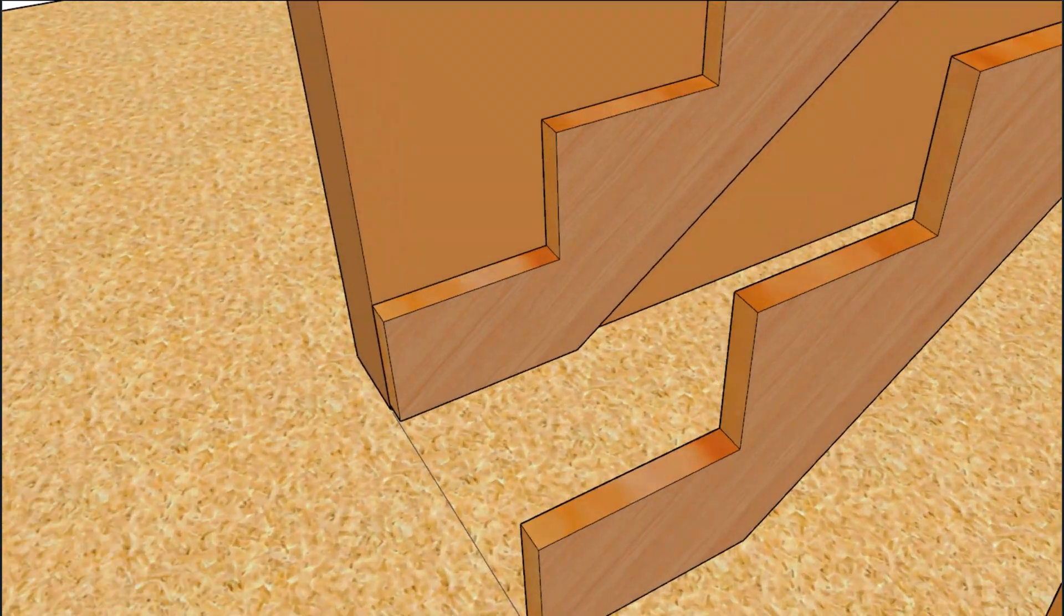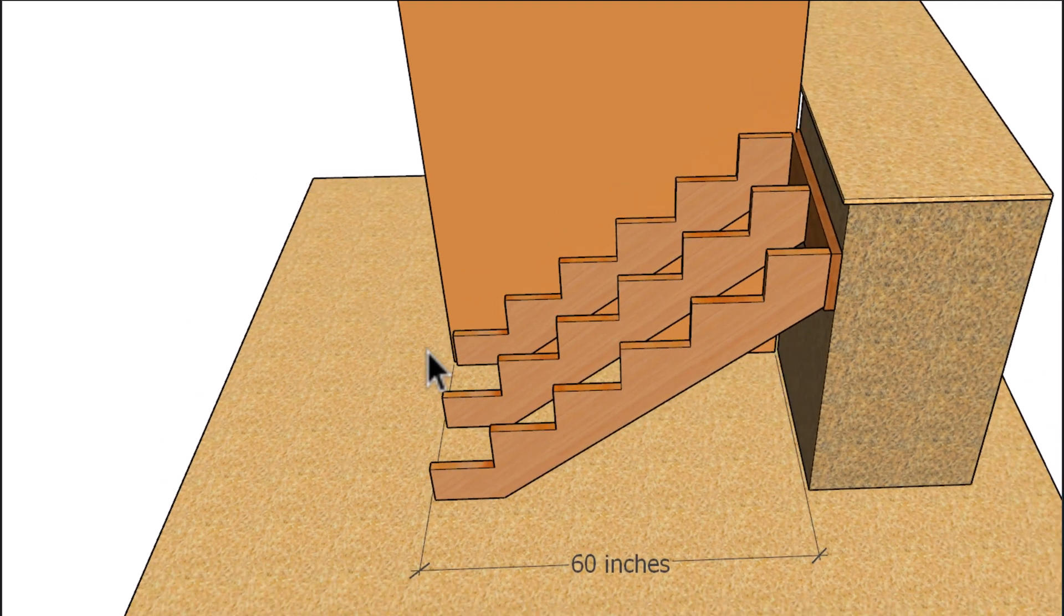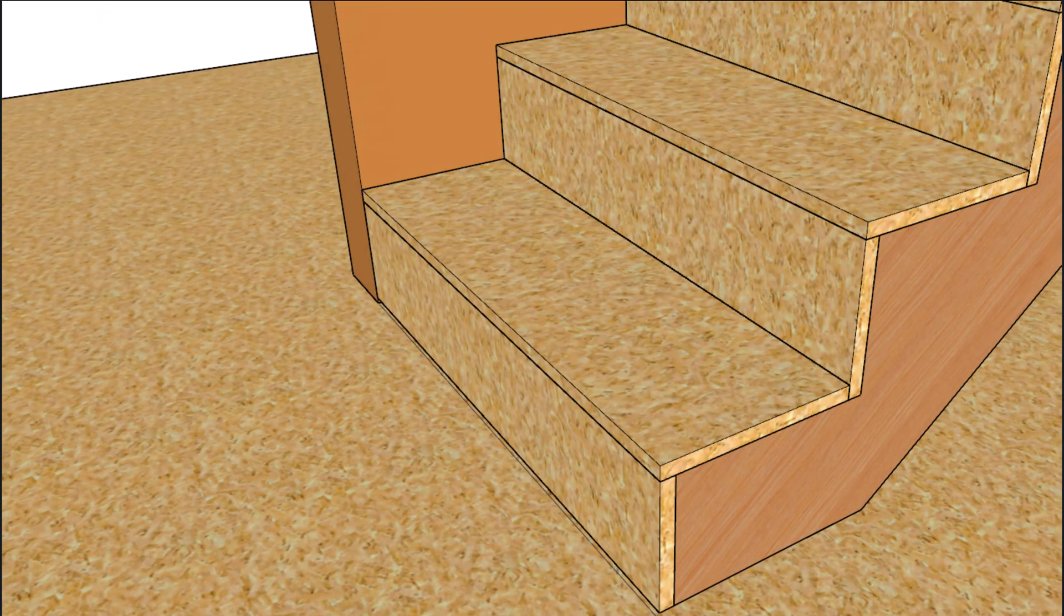You're going to need to move the stair stringers back the thickness of the riser. So I'm going to leave these lines here so you can see what we're doing. And since our risers are three-quarters of an inch thick, we're going to reposition the framing, whether it's going to be a wall or a wall with a ledger or a stairway that's going to connect directly to the floor joist. And this is going to be a very difficult thing to fix if you end up making the mistake.